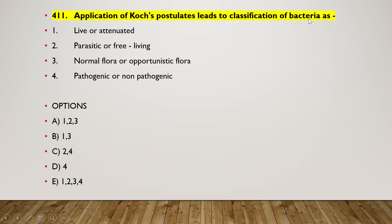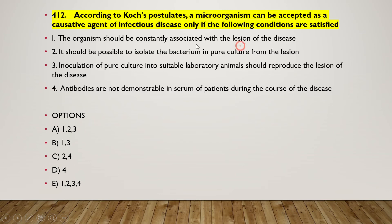Next question: application of Koch's postulates leads to classification of bacteria as — (1) live or attenuated, (2) parasitic or free living, (3) normal flora or opportunistic flora, (4) pathogenic or non-pathogenic. The right answer is option D — only number four is the correct answer.